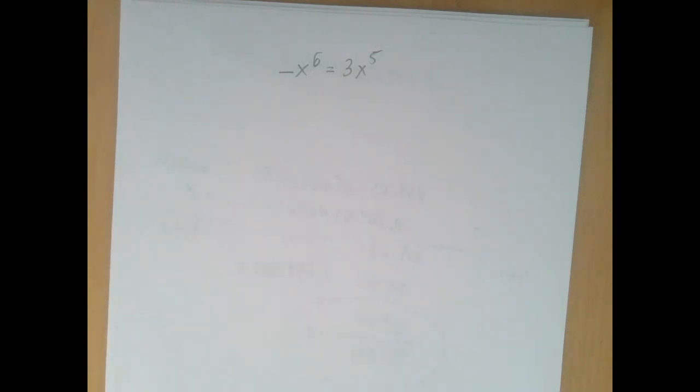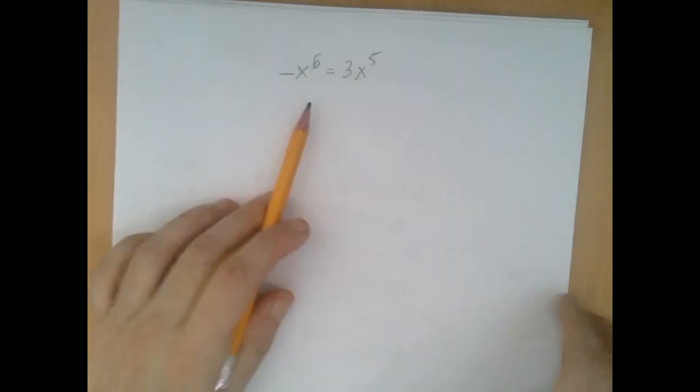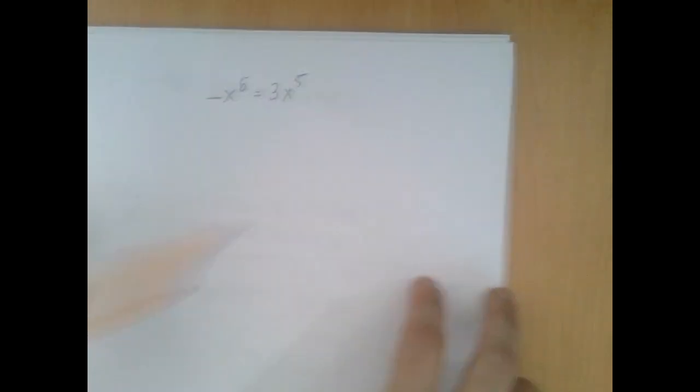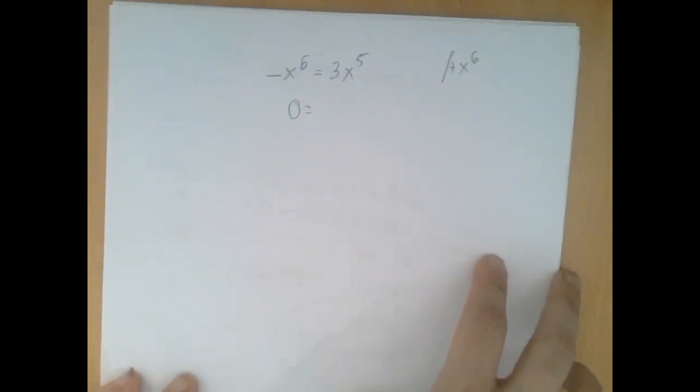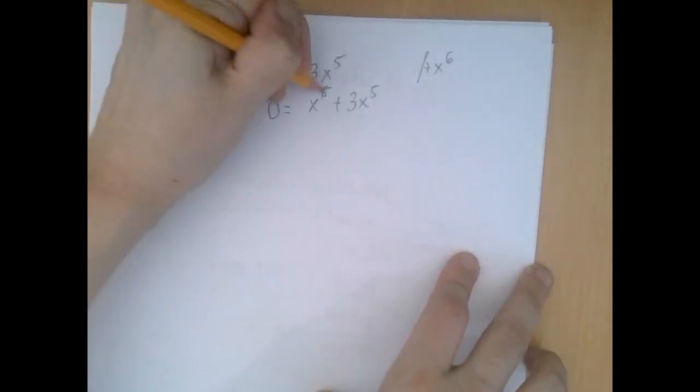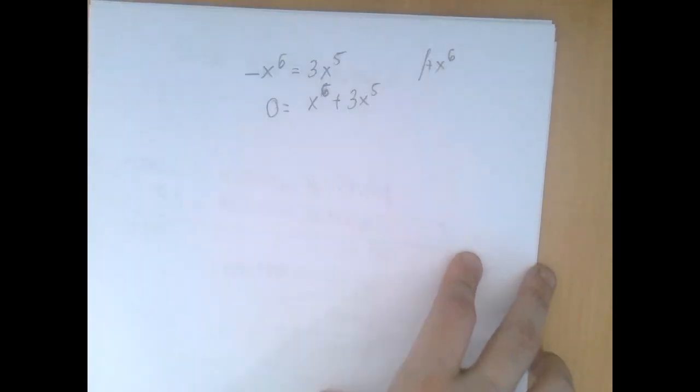In order to avoid a negative leading coefficient, we're going to add x to the sixth power to both sides. The left-hand side becomes zero, and this is x to the sixth plus three x to the fifth.